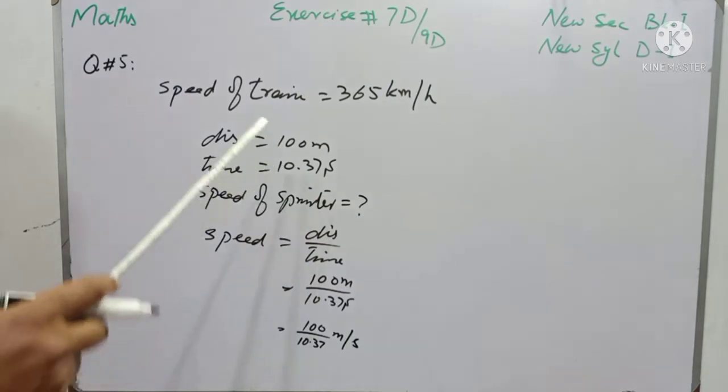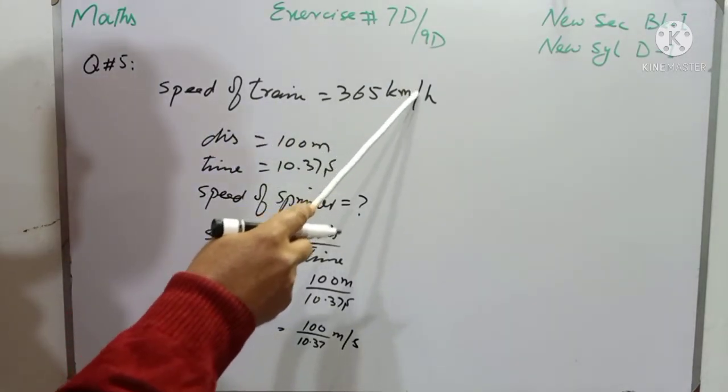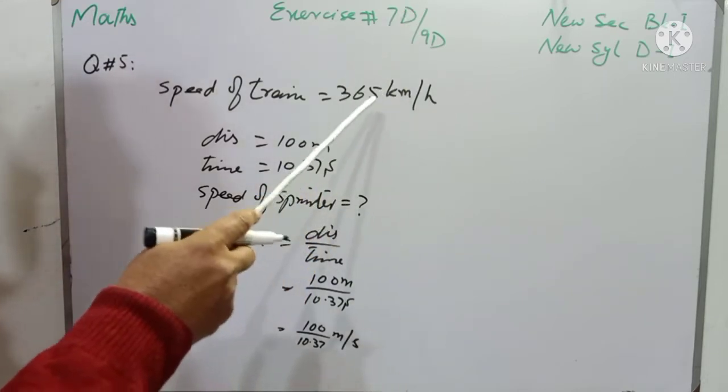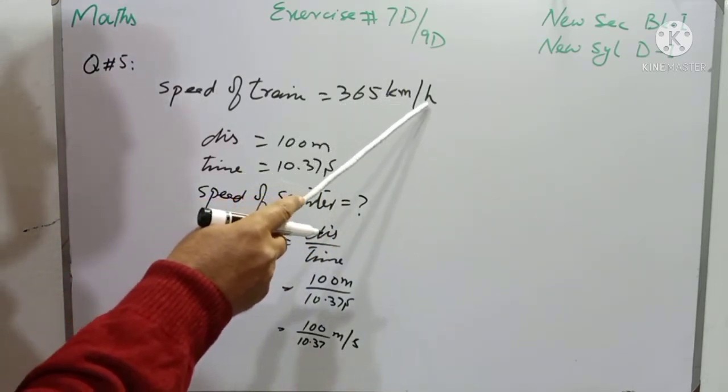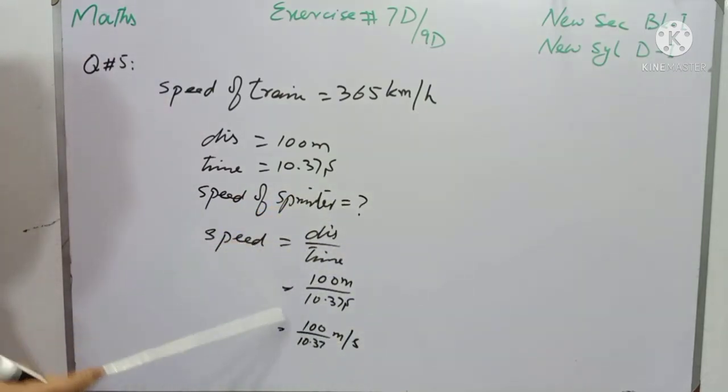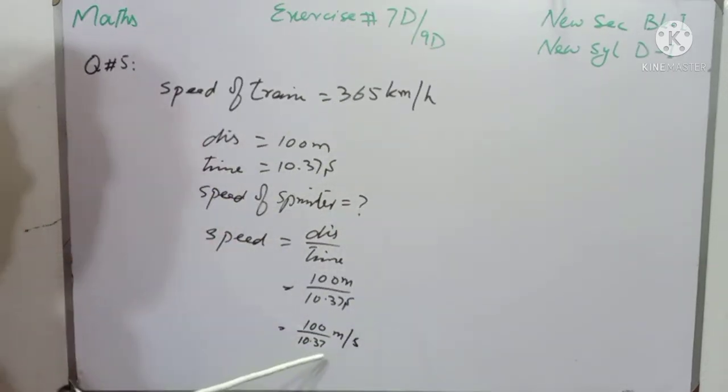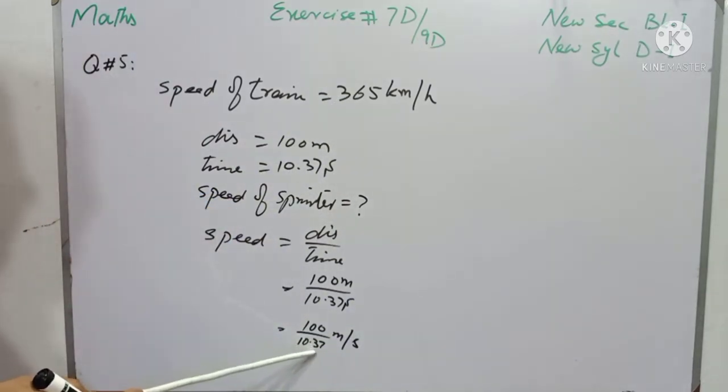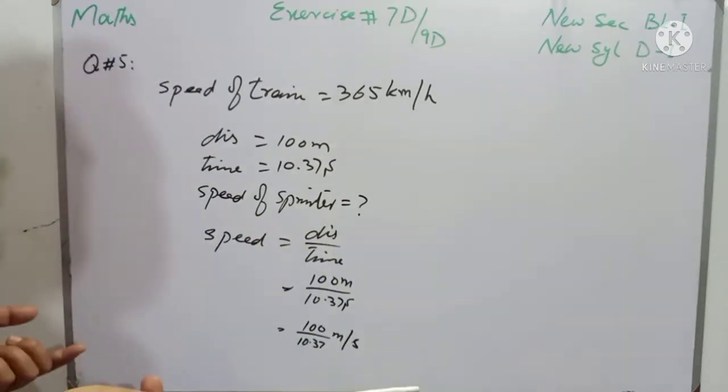And students, the average speed of the train is 365 km per hour. Either we have to convert the speed of train into meter per second, or we have to convert the speed of the player into kilometer per hour. And then we will divide the average speed of train with the average speed of player, and that will be the required answer.